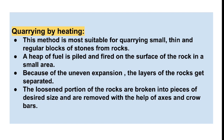In quarrying by heating, a heap of fuel is piled and fired on the surface of the rock in a small area. Due to heating and increase in temperature, the rocks explode. However, this method produces uneven expansion, meaning the pieces are not of proper size and shape. It is useful for small quarrying processes only. The loosened portions are broken into pieces of desired size using axes and crowbars.